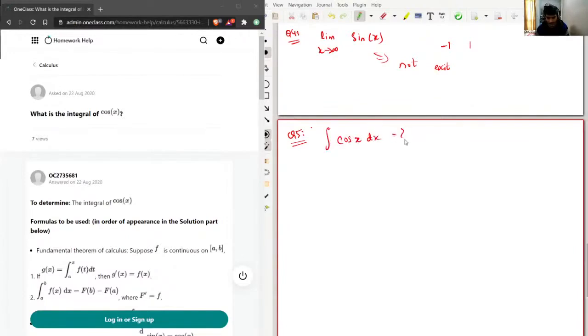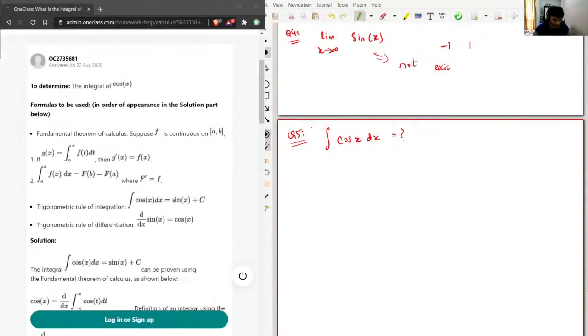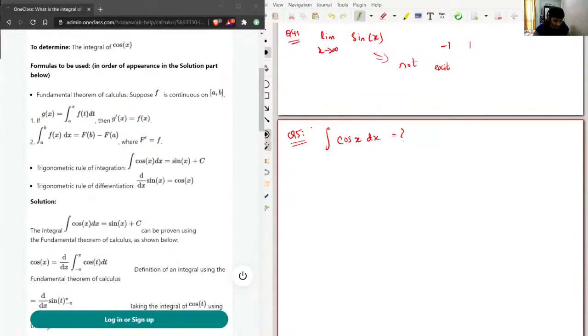Now the thing is that I directly know the integral of cosine x, but I'll just go with the derivation given by Julia Tutor here. To determine the integral of cosine x, we have formulas used - fundamental theorem of calculus. Suppose f is continuous on a and b.